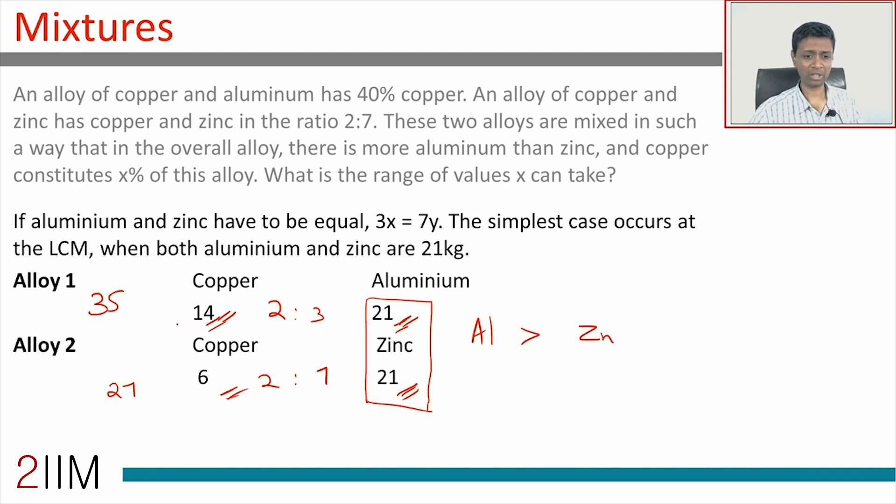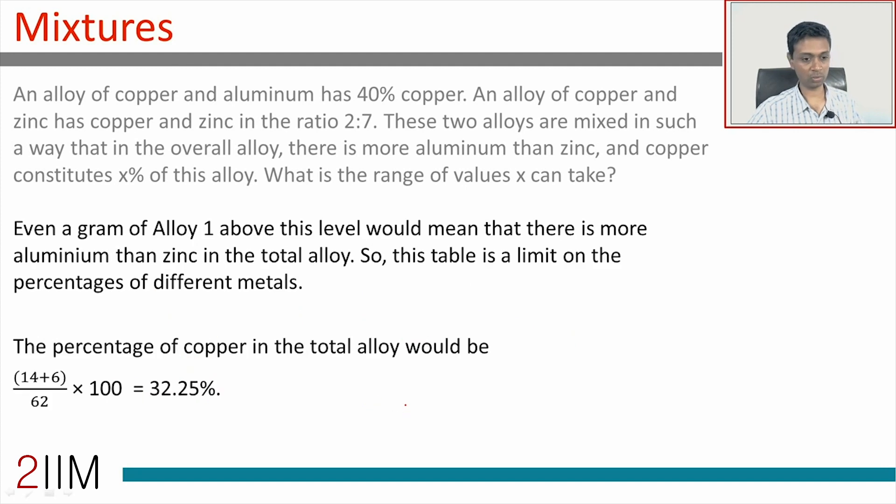What is the extent of copper? 14 units of copper here, 6 units of copper here, in a total of 35 plus 27 units available to us. The ratio is 14 plus 6 by 62 into 100, 20 by 62 into 100. This is the minimum amount of copper that will be there, because if we have any less of alloy 1 than alloy 2 then zinc will be more than aluminum. So the minimum amount of copper that should be there is 32.25%.